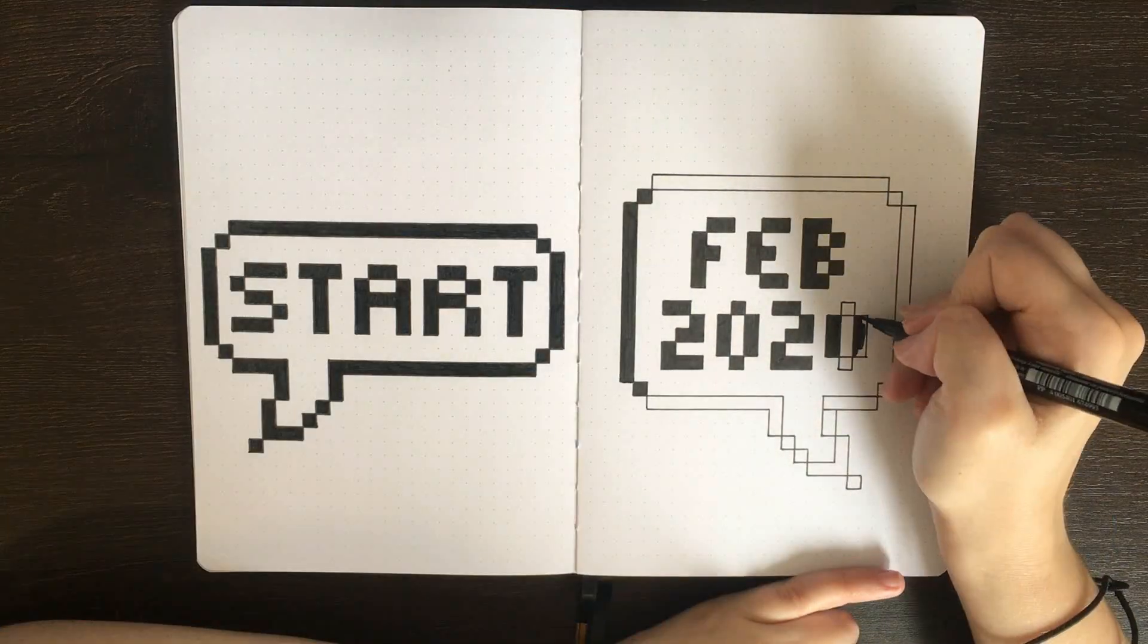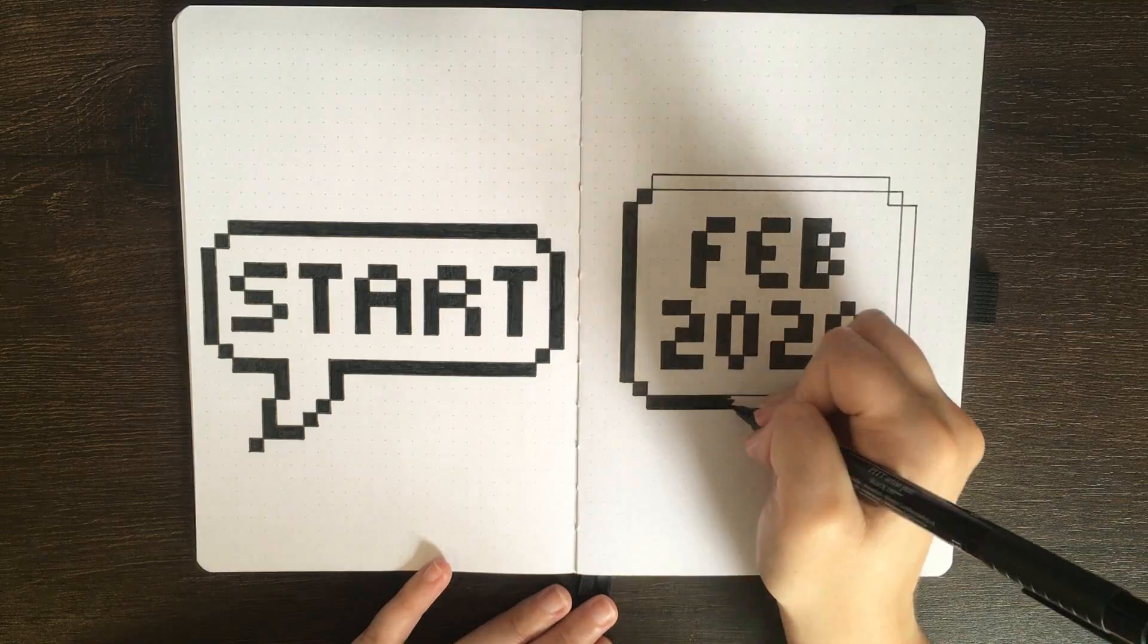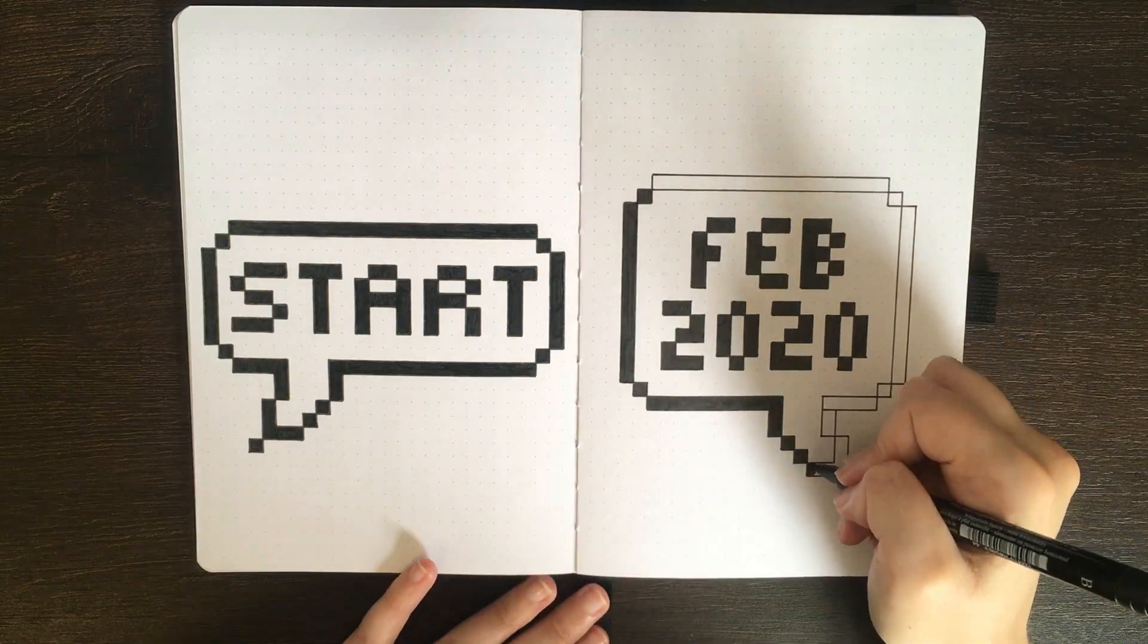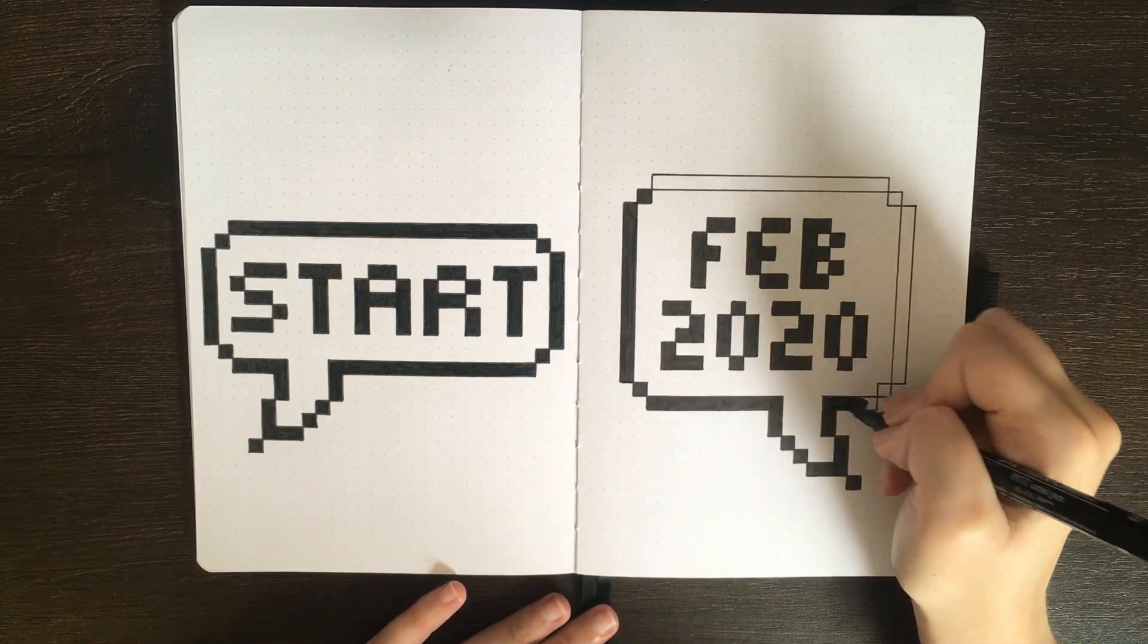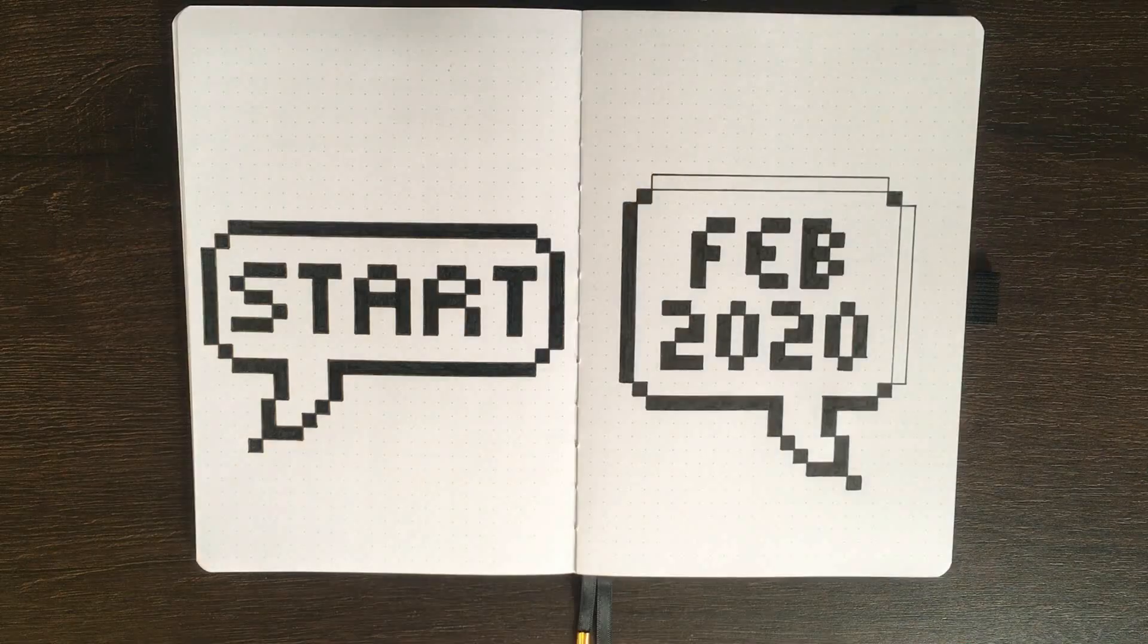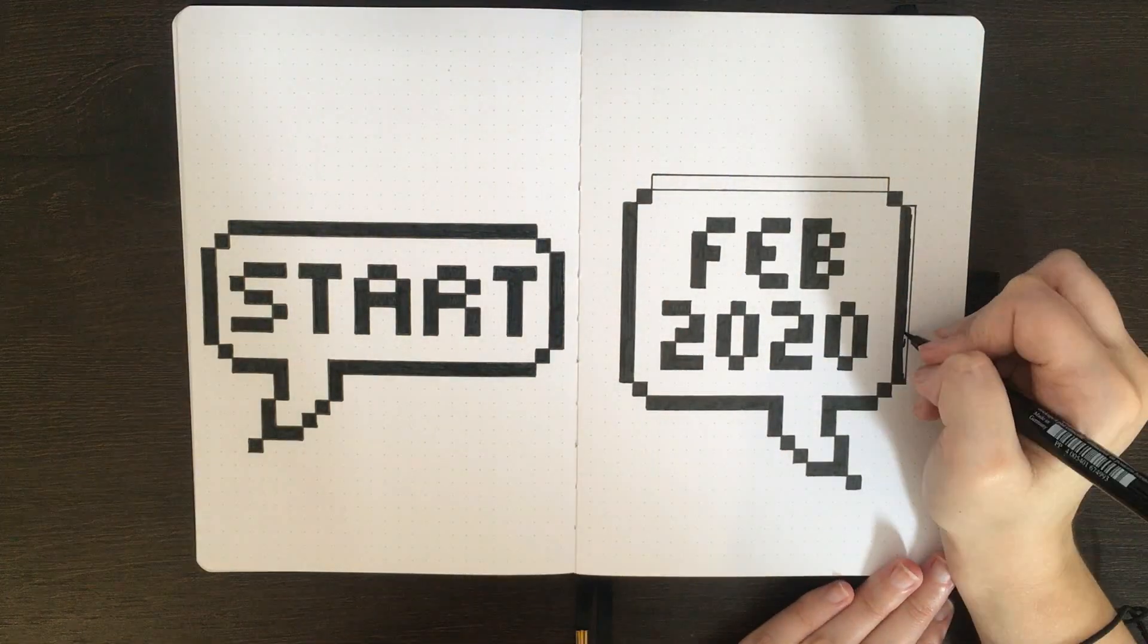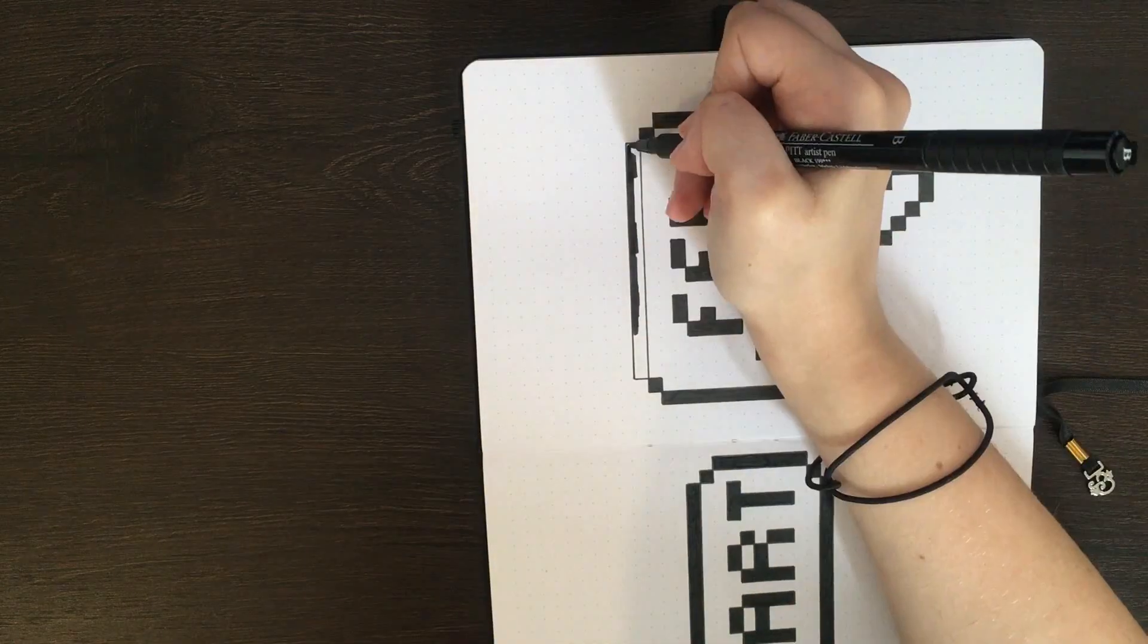The nice part about the pixelated styles of the decoration in this setup is that you can use the dot grid to give yourself even-sized boxes that you can build up into the decoration you want to include. Of course, in some of my decoration, I wanted my pixels to be smaller than the 5x5mm of my journal, but at least for my cover page and the main headers on each of the pages that follow, I was able to use the dot grid to do this really easily.